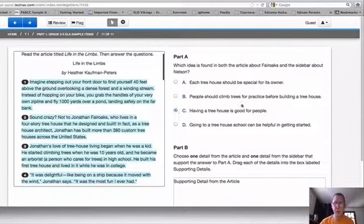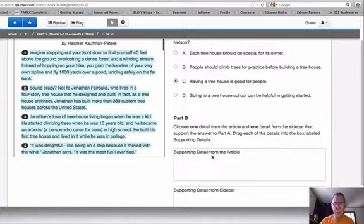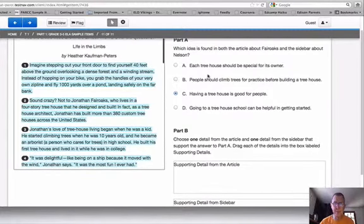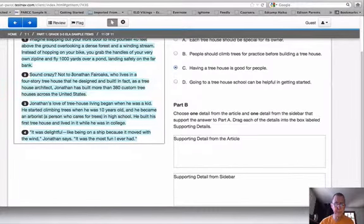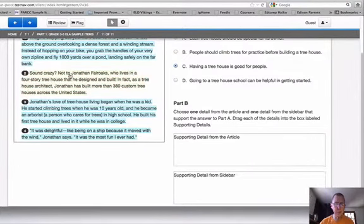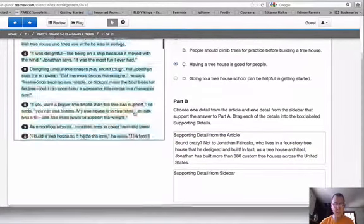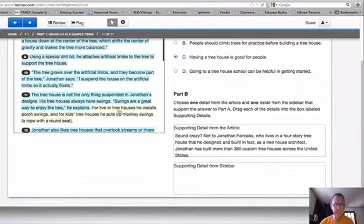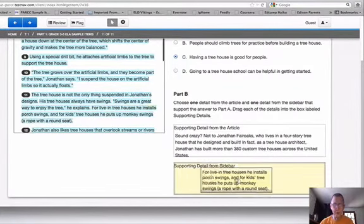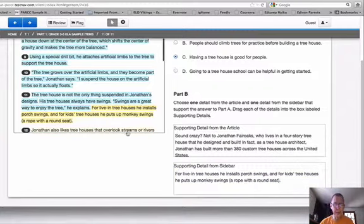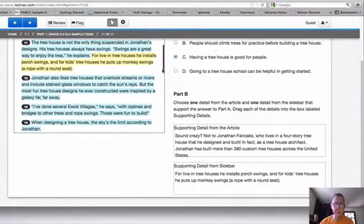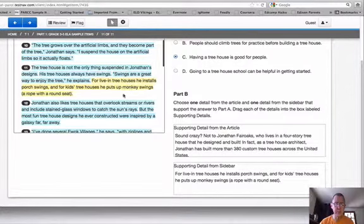What I would do is figure out a supporting detail from the article and a supporting detail from the sidebar that supports the answer in Part A. I would choose a supporting detail in the main article and click, hold, and drag it into this box. Then I would go down to the sidebar, choose a supporting detail, and drag it into this box. Once you've dragged the details into the boxes, the details that you dragged will stay yellow in the articles.